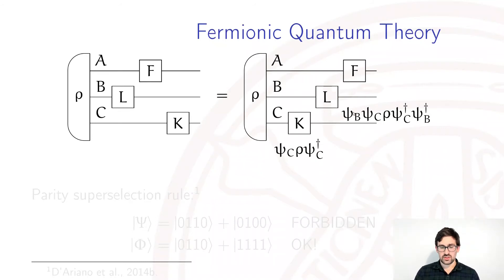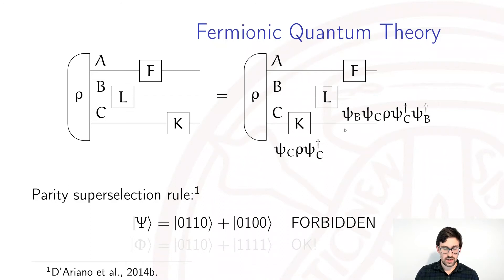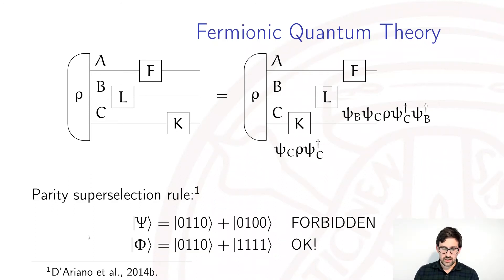A consequence of this notion of locality is the parity superselection rule, which is quite simple to state. In fermionic quantum theory, two pure states cannot be coherently superimposed if they have different parity — where parity means whether the total number of excitations is even or odd. Superposition is allowed only if both states are, for example, even.